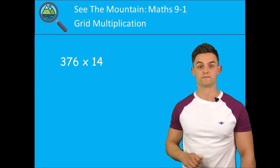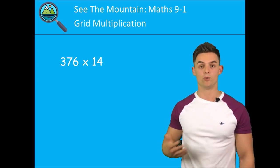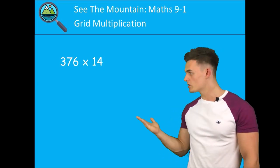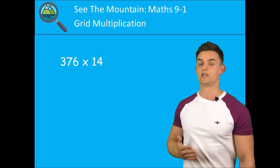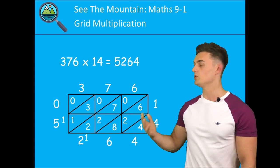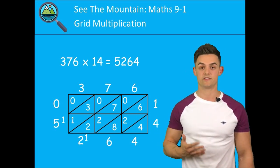Pause the video and have a go at this example. We have 376 multiplied by 14 - that's a three-digit number multiplied by a two-digit number, so our grid is going to be a three by two grid. I filled it in for you and it should look like this: 376 multiplied by 14 equals 5264.